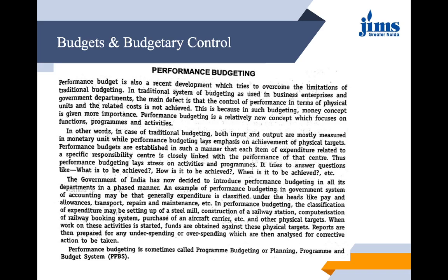Performance budgeting helps answer questions like: what is to be achieved, how it is to be achieved, and when it is to be achieved. The Government of India has decided to introduce performance budgeting in all its departments in a phased manner. In a common system of accounting, expenditure is classified under heads like pay and allowances, transport, repairs and maintenance, etc. In performance budgeting, classification may be by physical targets such as setting up a steam mill, construction of a railway station, computerization of a railway booking system, or purchase of an aircraft carrier. Funds are obtained against these physical targets, and reports are prepared for any underspending or overspending for corrective action. Performance budgeting is sometimes also called program budgeting or the Planning, Programming, and Budgeting System (PPBS).